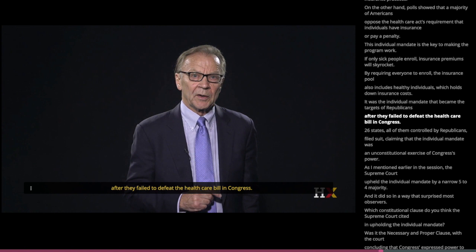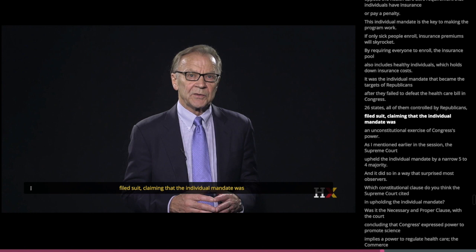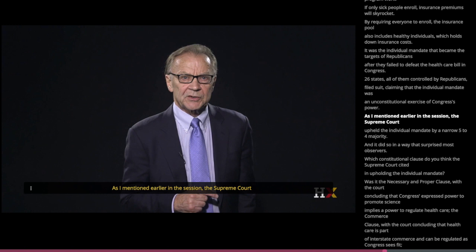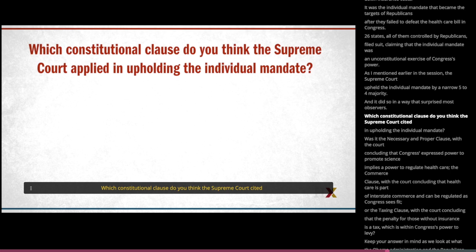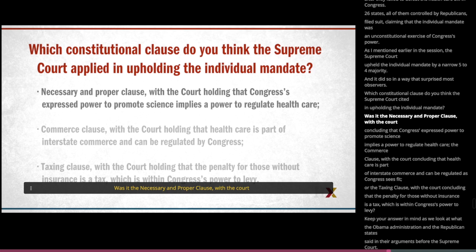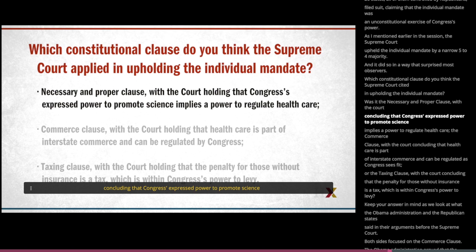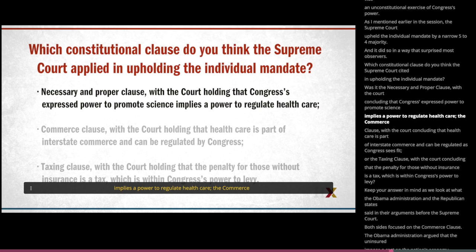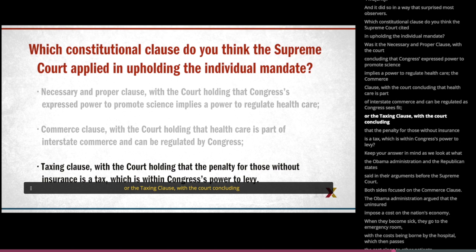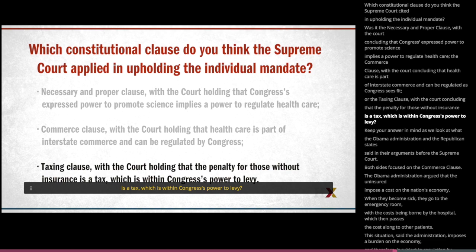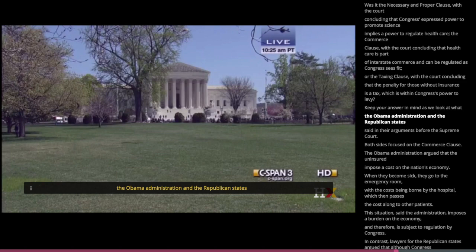26 states, all controlled by Republicans, filed suit claiming the individual mandate was an unconstitutional exercise of Congress's power. The Supreme Court upheld the individual mandate by a narrow 5-to-4 majority, and did so in a way that surprised most observers. Which constitutional clause did the Supreme Court cite? Was it the Necessary and Proper Clause, the Commerce Clause, or the Taxing Clause? Both sides focused on the Commerce Clause. The Obama administration argued that the uninsured impose a cost on the economy — when they become sick, they go to the emergency room, with costs borne by the hospital and passed along to other patients, imposing a burden on the economy and therefore subject to congressional regulation.